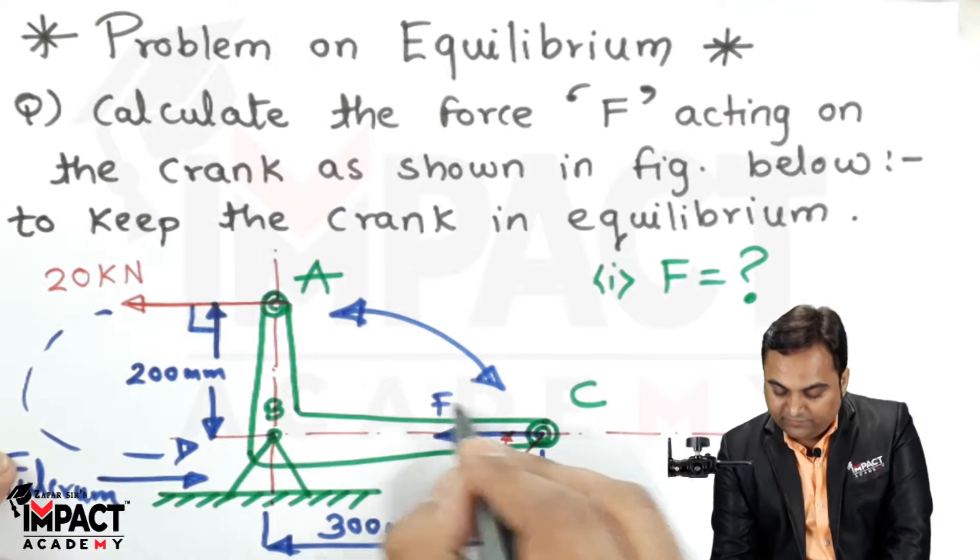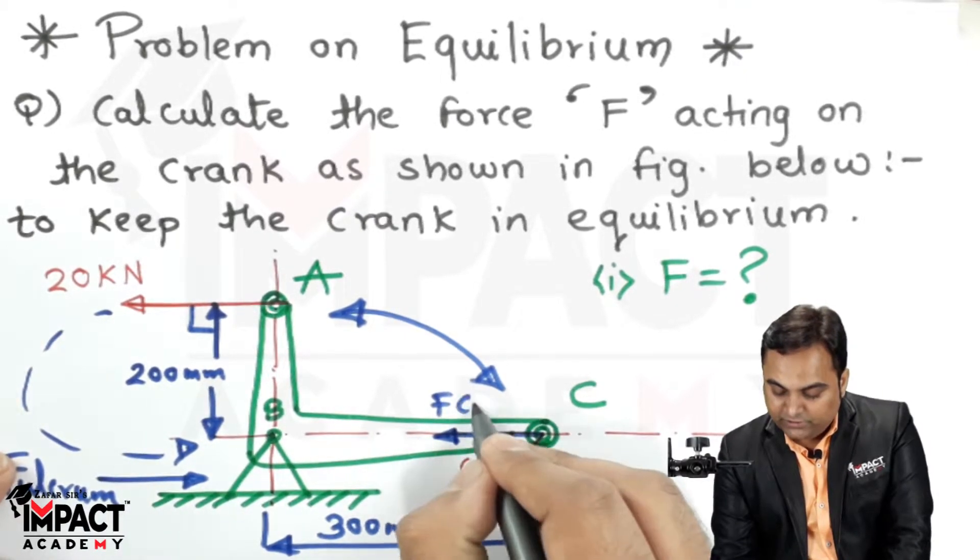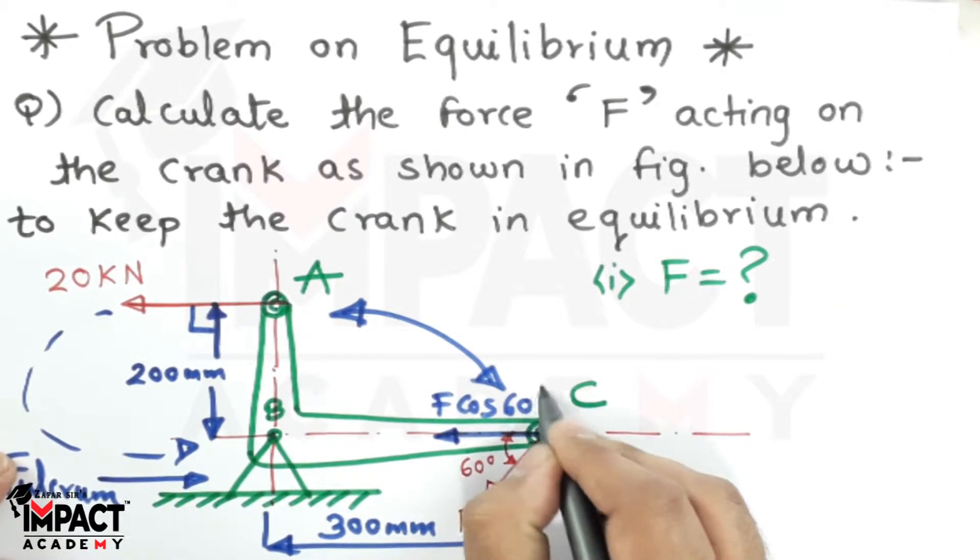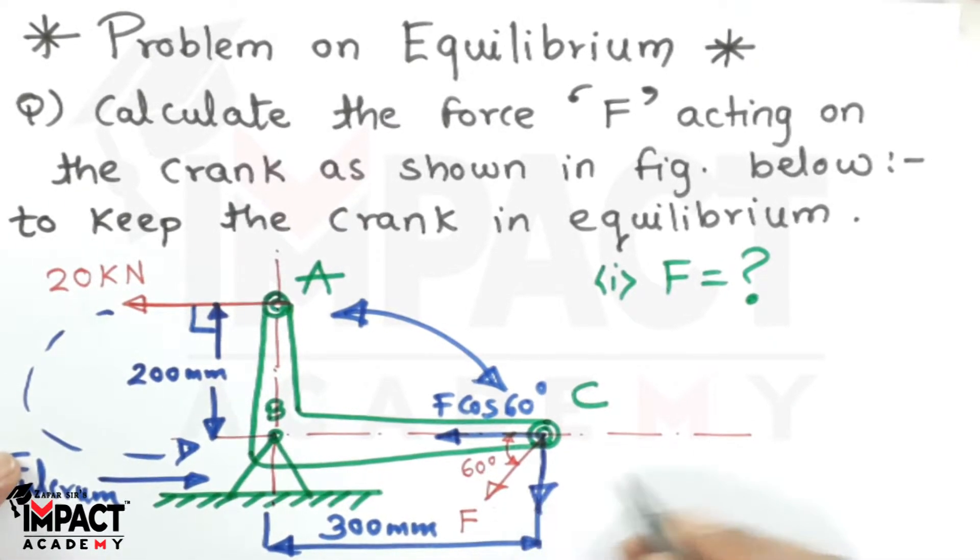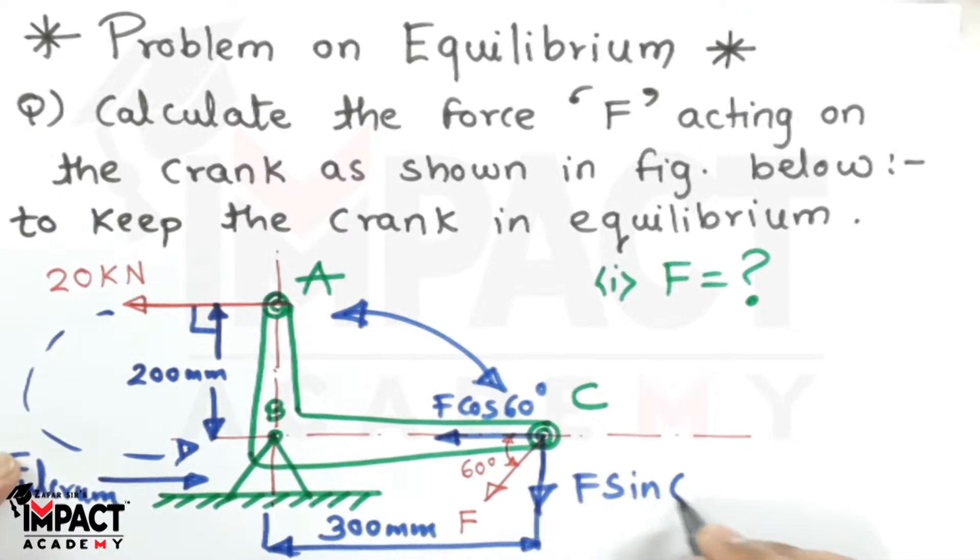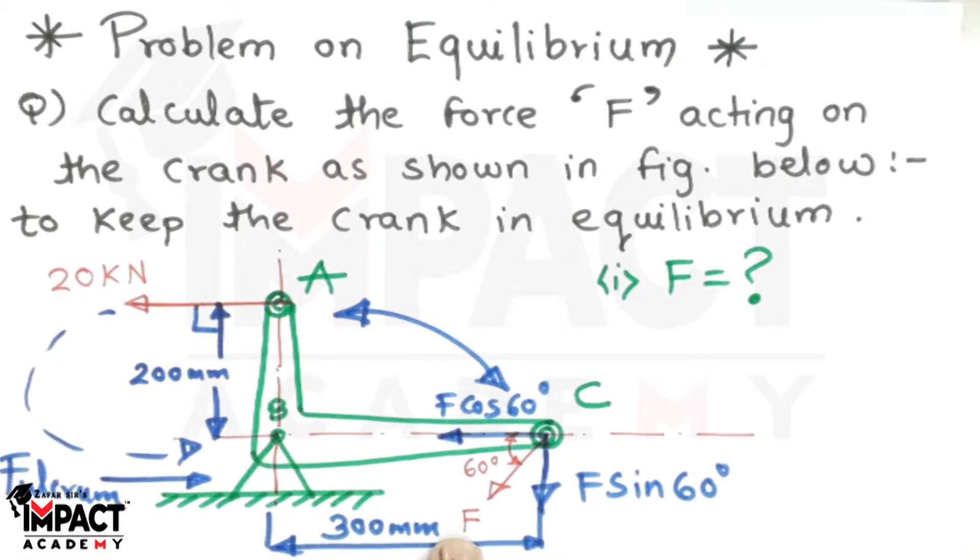The horizontal component value would be F cos 60 degrees, since the angle is measured with respect to the horizontal line. The vertical component would be F sin 60 degrees. So instead of using F directly, these two components would be used: the horizontal and vertical components.